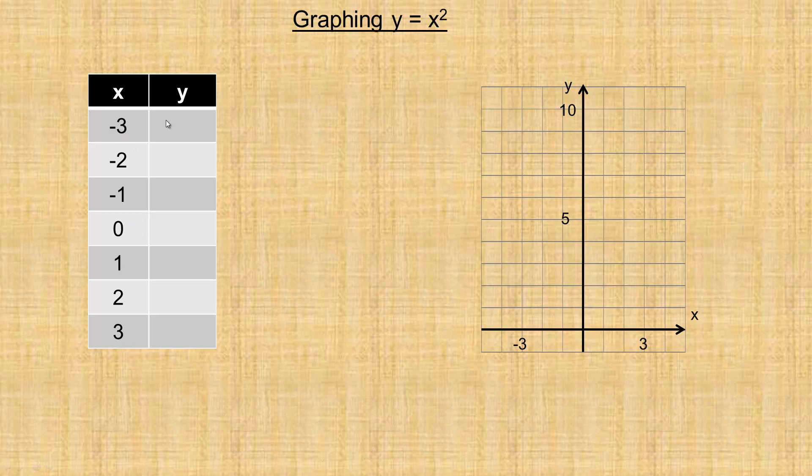To evaluate this, we're going to substitute each of these numbers one at a time in place of x in the function. The first thing we're going to evaluate, we're going to put negative 3 in there and square it. Negative 3 squared - now I'm squaring the negative 3 - that means negative 3 times negative 3, which is positive 9. So we'll put a 9 here.